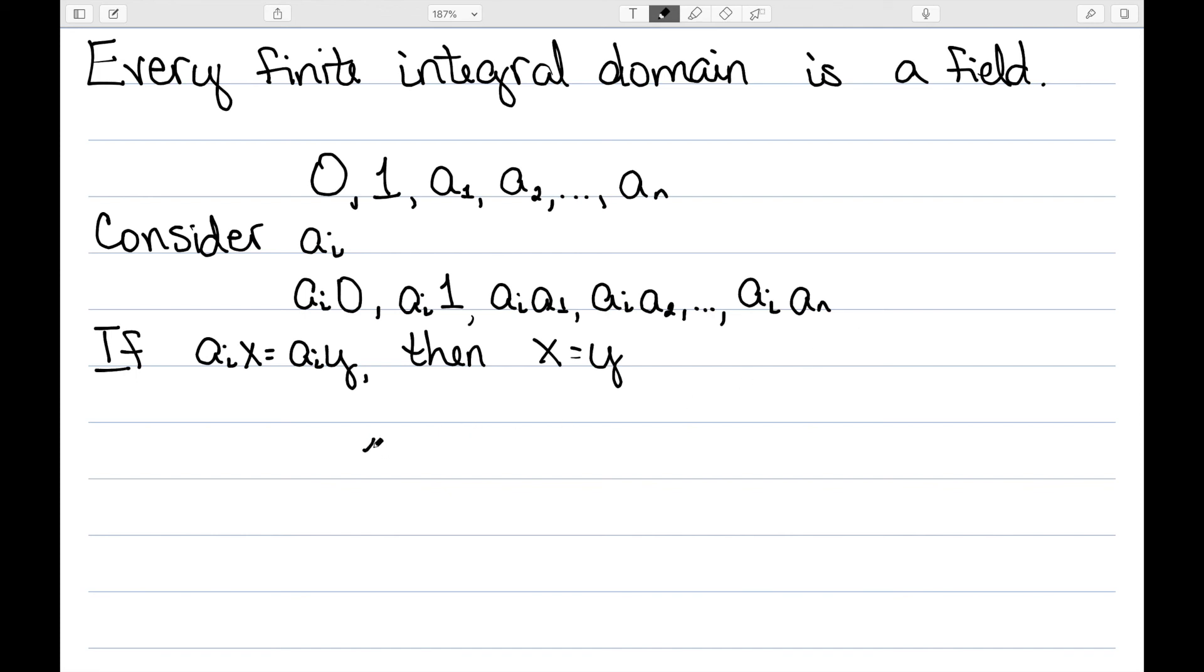So for one of them, we must have that it's equal to 1 to get this one to one correspondence. So therefore, every element that's not 0 would be invertible. So a finite integral domain is a field.